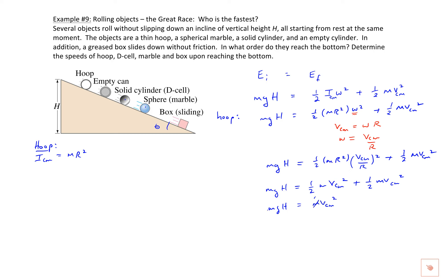The masses cancel out. Just as the radius became irrelevant, the mass does too — the result doesn't depend on the shape parameters or the mass. So the velocity of the hoop at the bottom is given by v = √(gh).